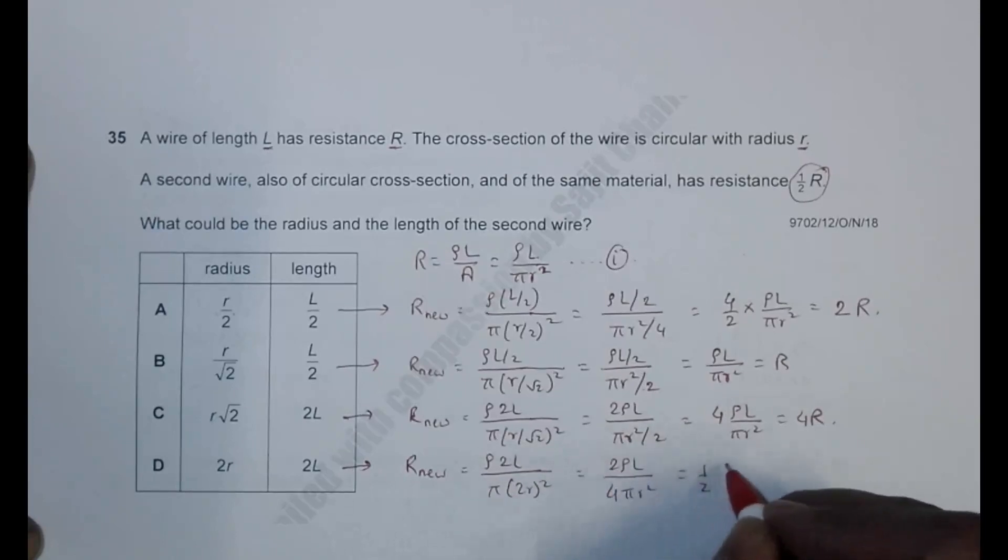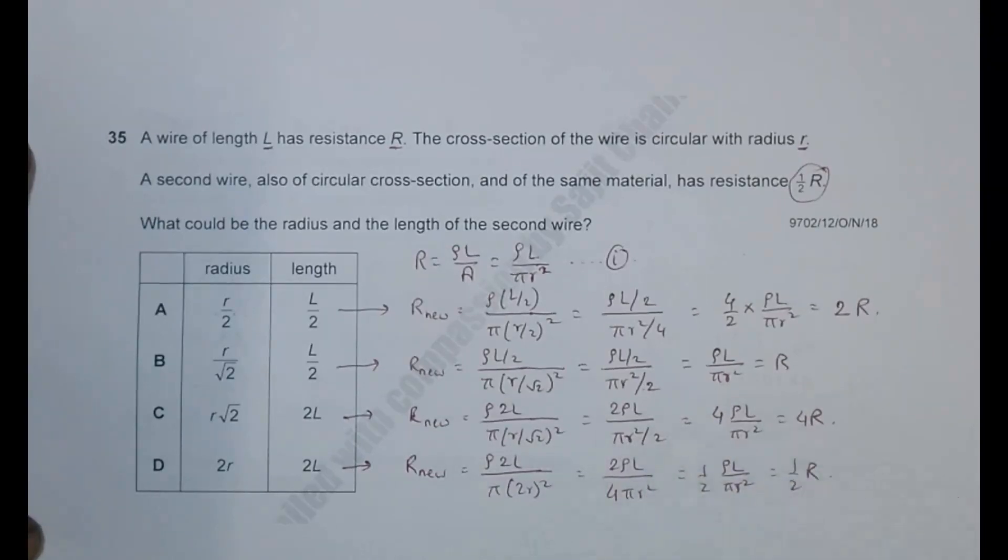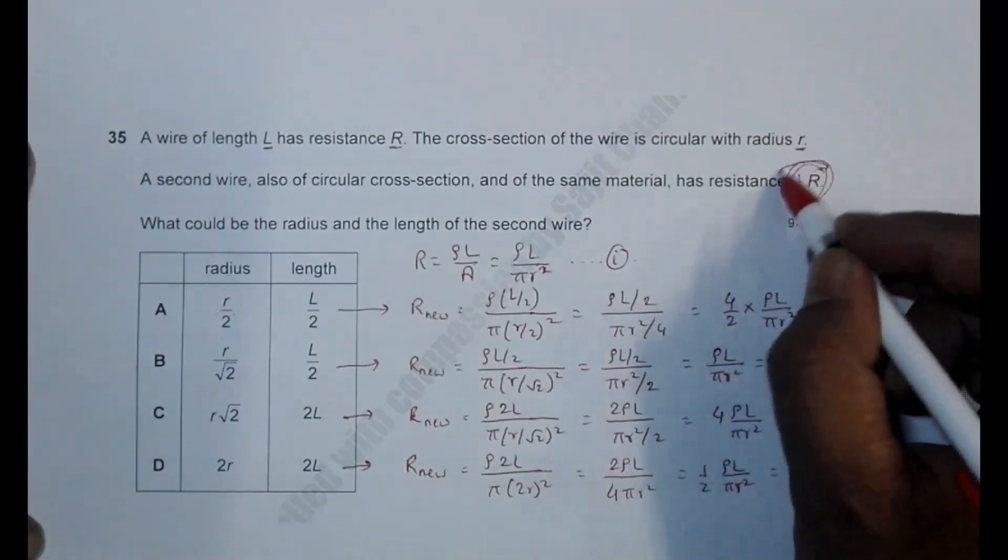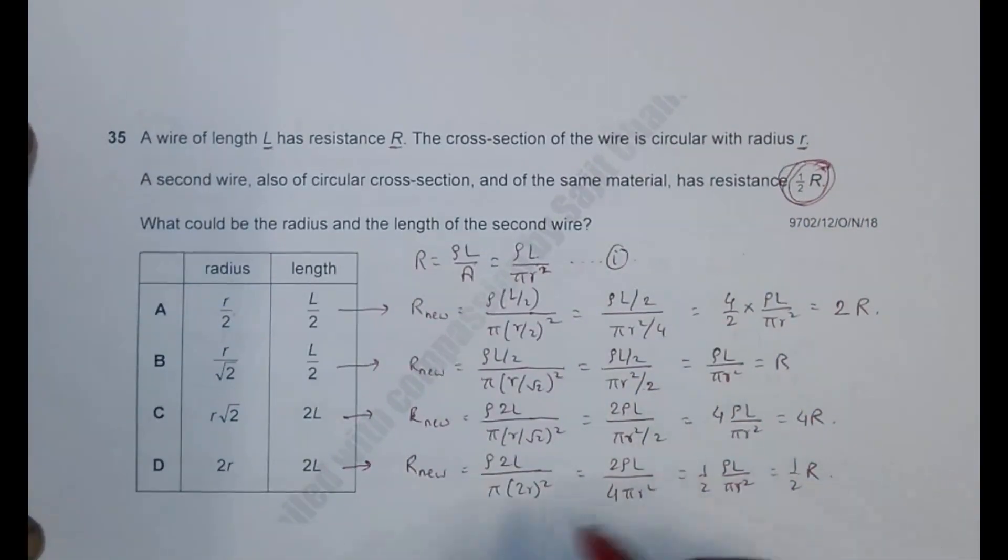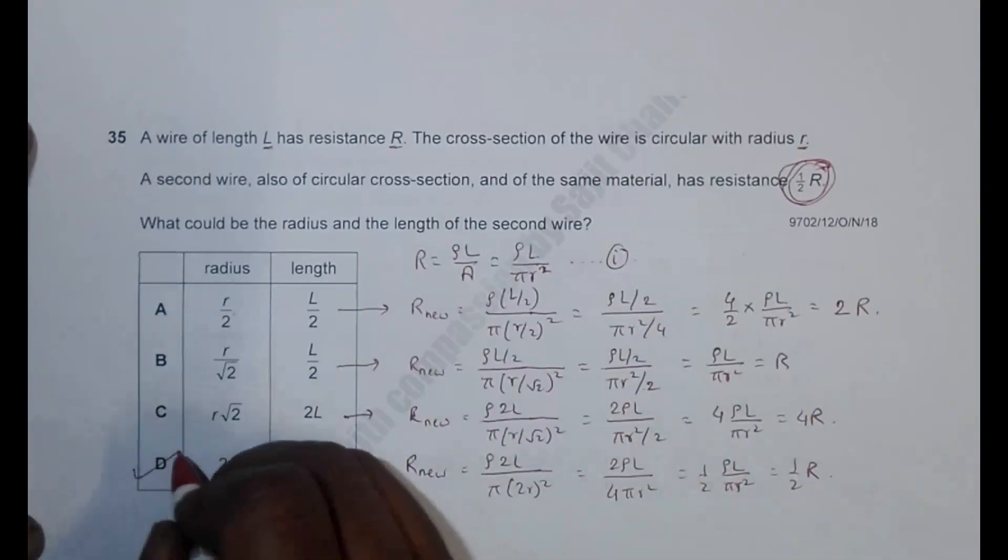So 2 by 4 is 1/2. 1/2 times ρL/πr² is equal to 1/2 R. So this means that the correct choice comes to be choice number D, because it's according to what is given by the question. The correct choice is choice number D.